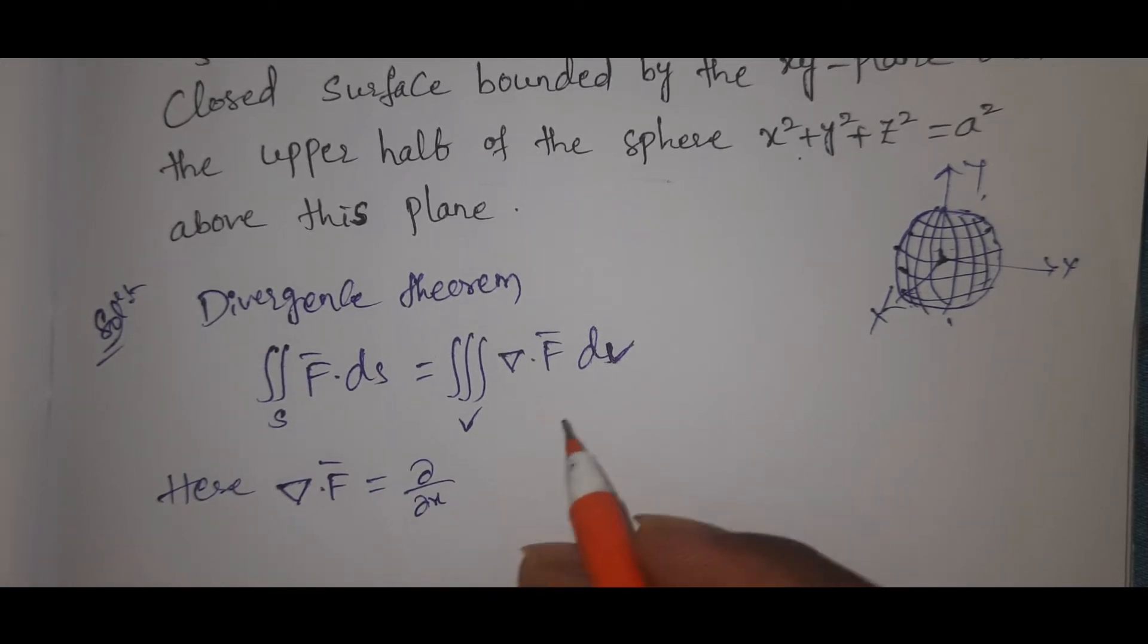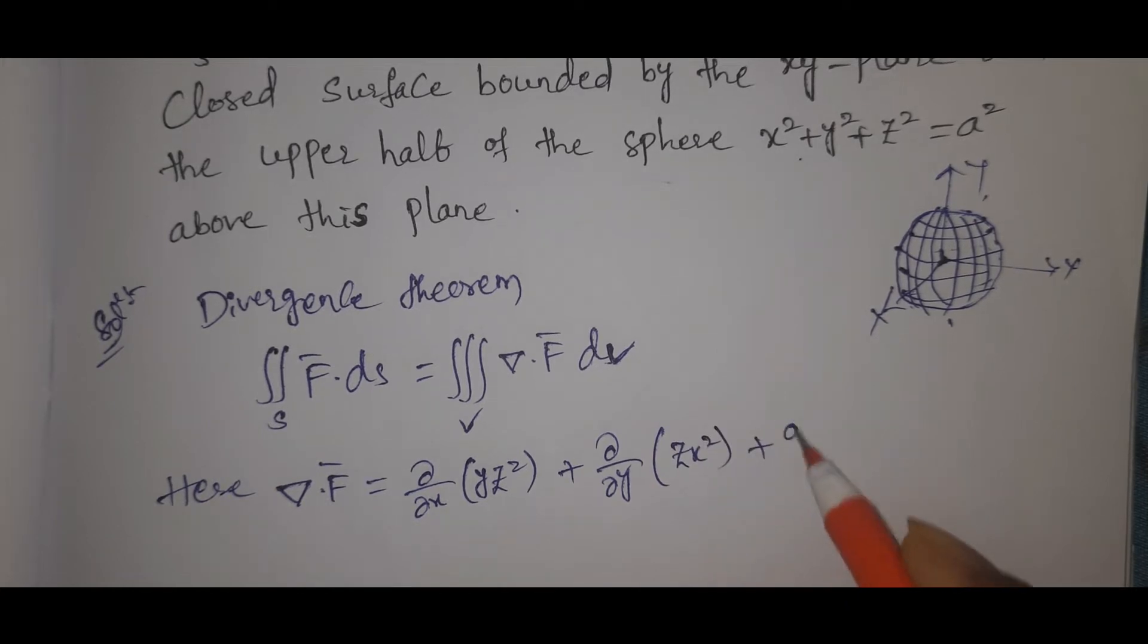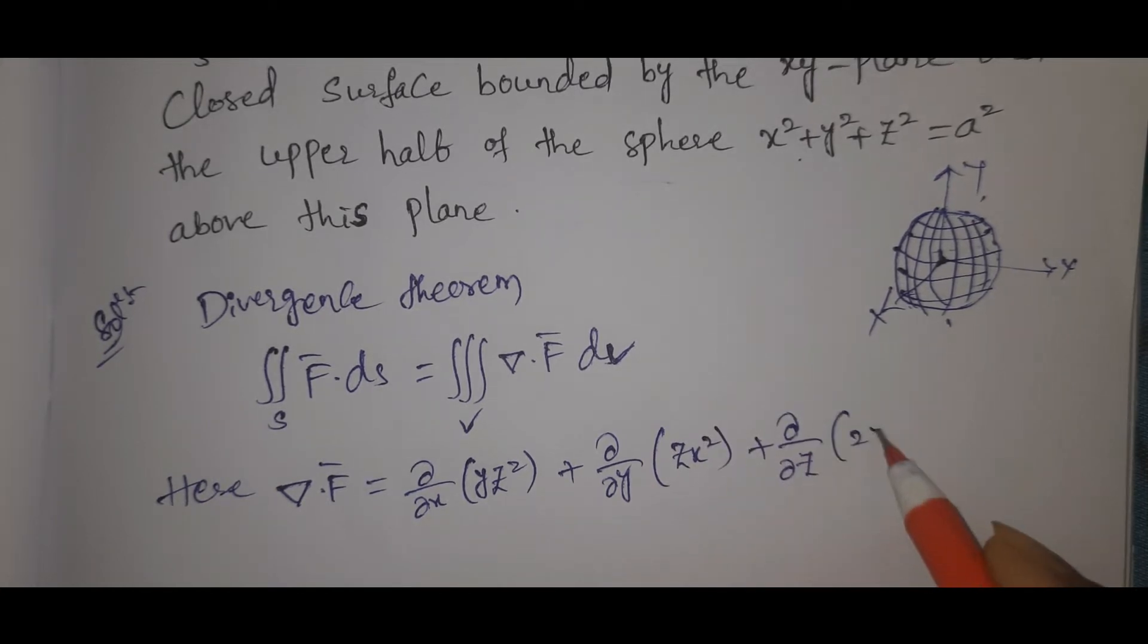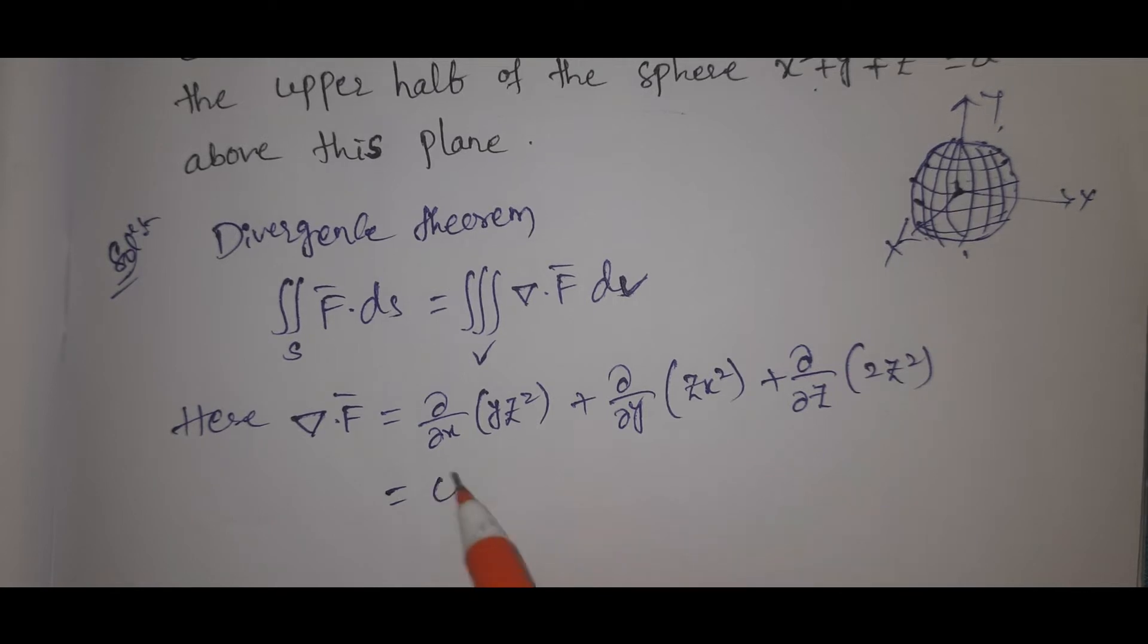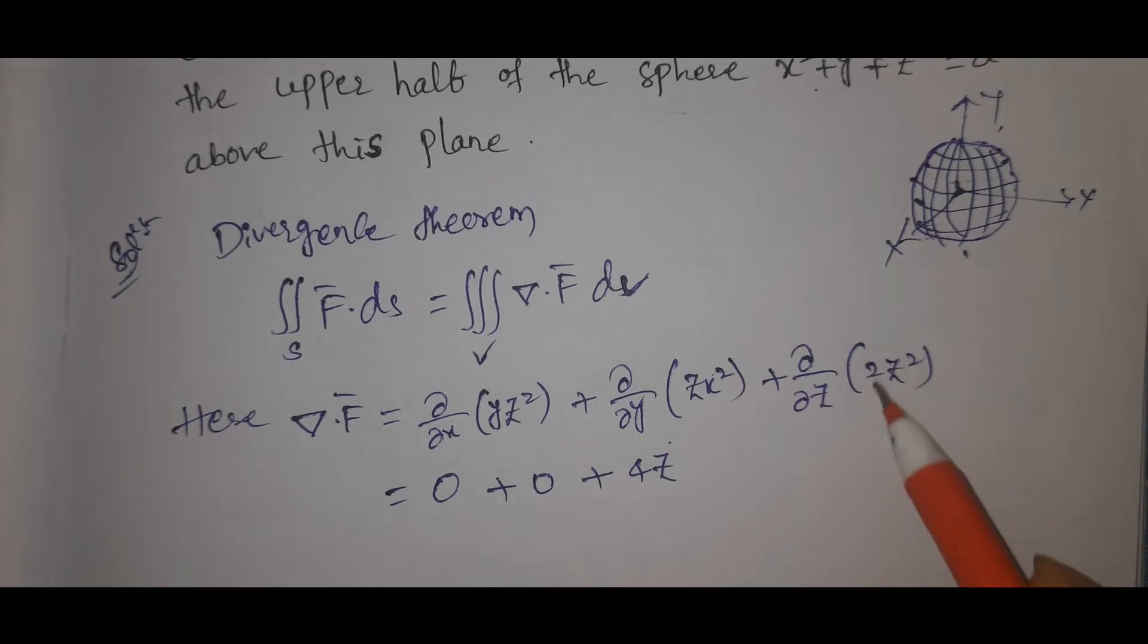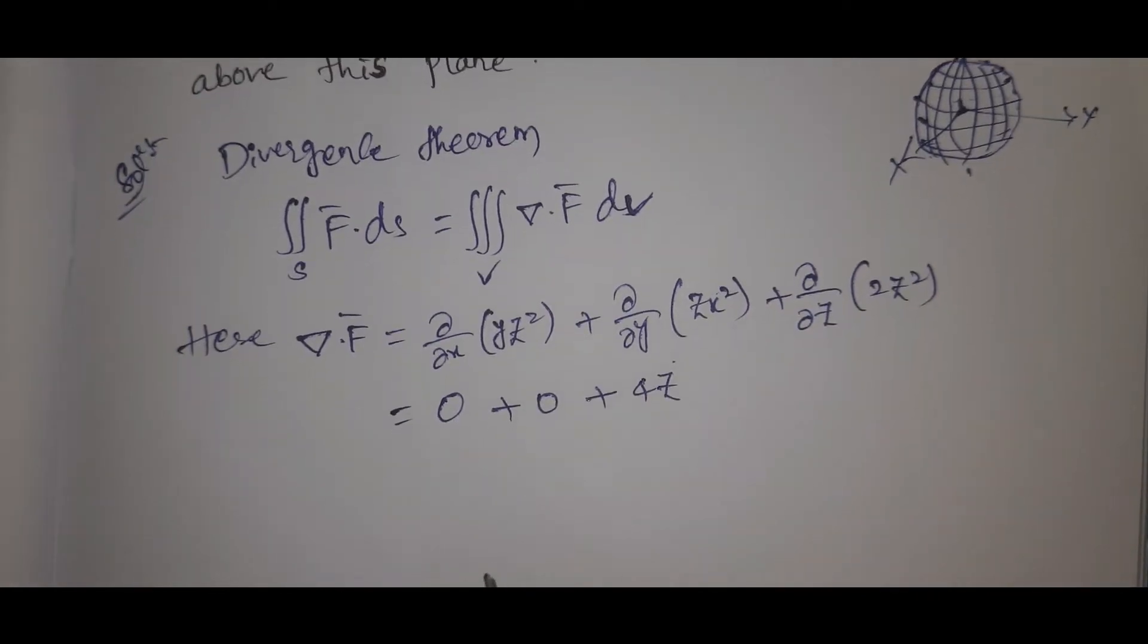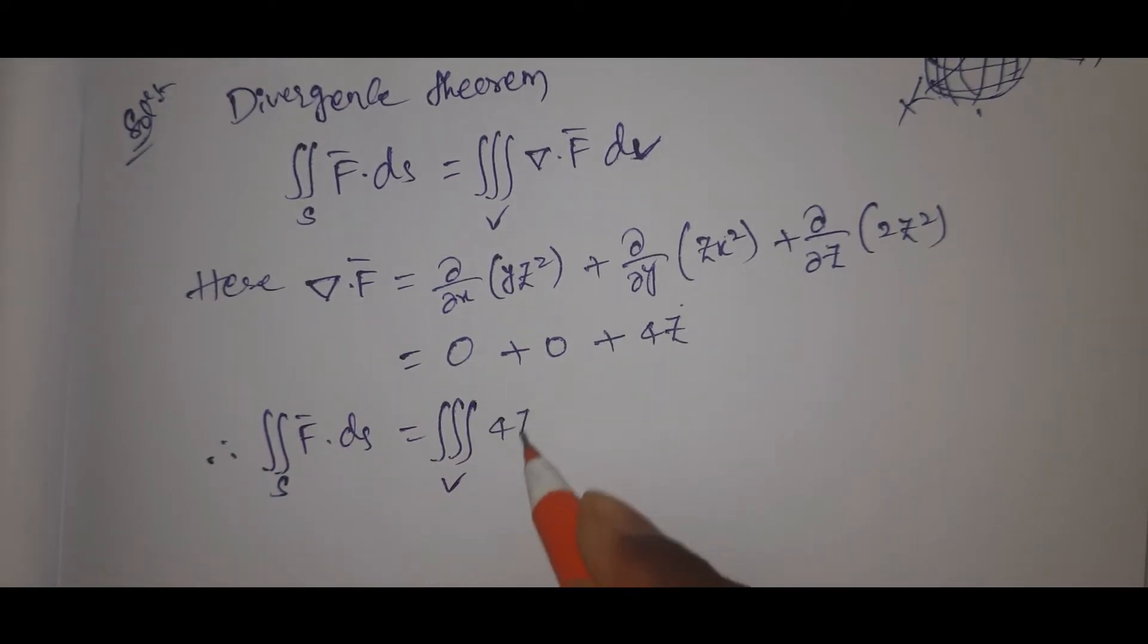Divergent F bar, ∇·F = ∂/∂x(yz²) + ∂/∂y(zx²) + ∂/∂z(2z²). With respect to x this is 0, with respect to y is 0, plus 4z. Therefore double integral S F·dS equals triple integral V 4z dx dy dz.